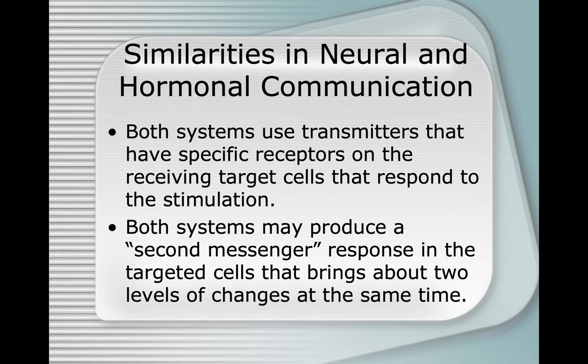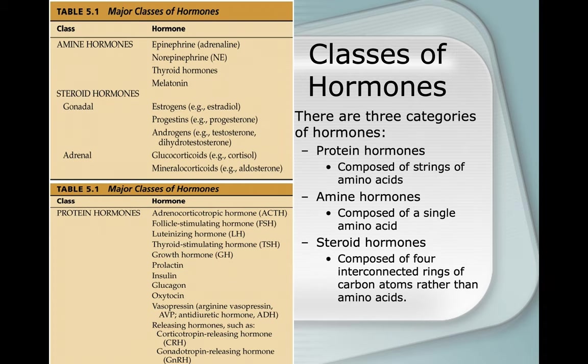Both systems use transmitters that have specific receptors on the receiving target cells. Both systems may produce a second messenger response in a targeted cell. Some hormones used by the endocrine system are also produced by neurons and used as neurotransmitters. There are three categories of hormones: amine hormones, steroid hormones, and protein hormones.